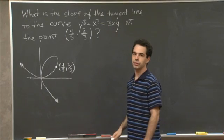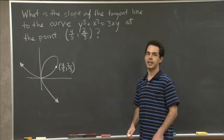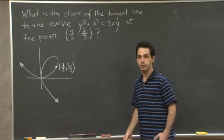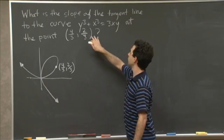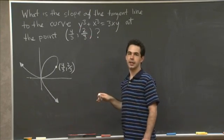So we start with this equation, y cubed plus x cubed equals 3xy. And we can take a derivative with respect to x. So let's start with it in the order it's given.